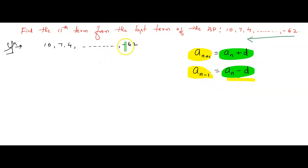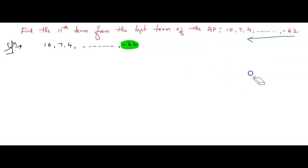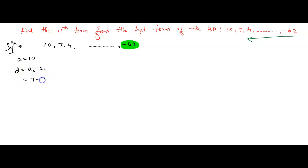Here we have a last term of minus 62. I want one more number before minus 62 — what does it come to? If you want to find the previous term, first you need to find the common difference. According to the given statement, the first term is 10. The common difference, a2 minus a1, is 7 minus 10, which is minus 3.